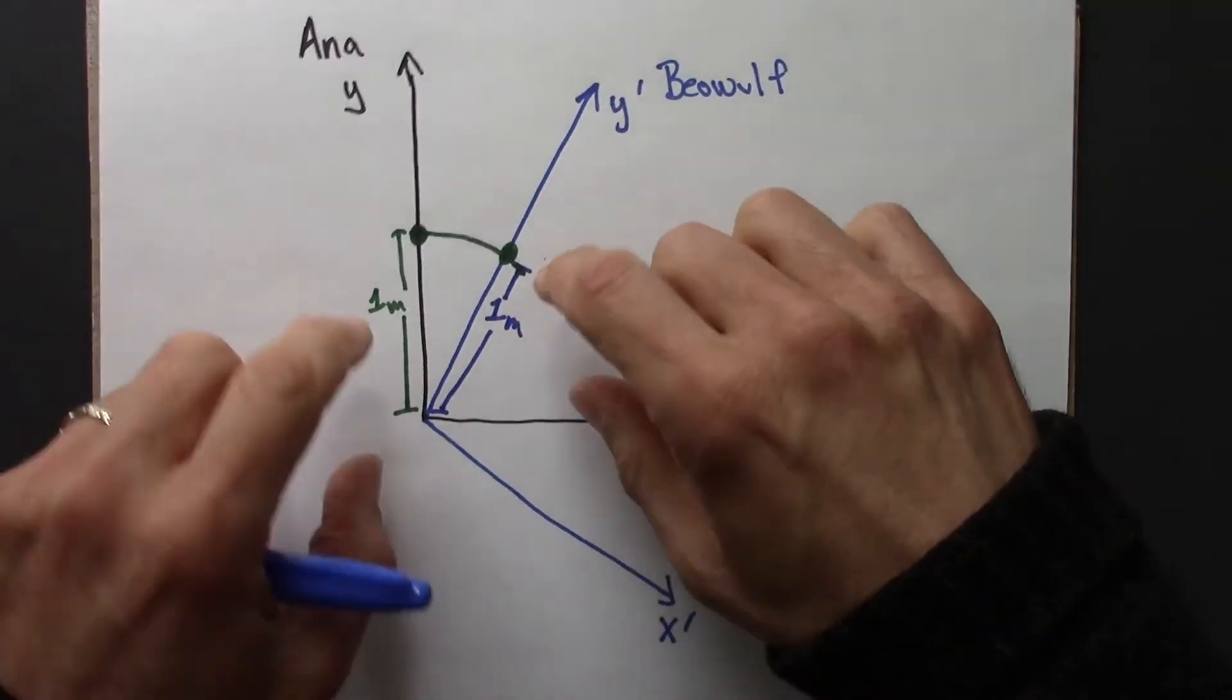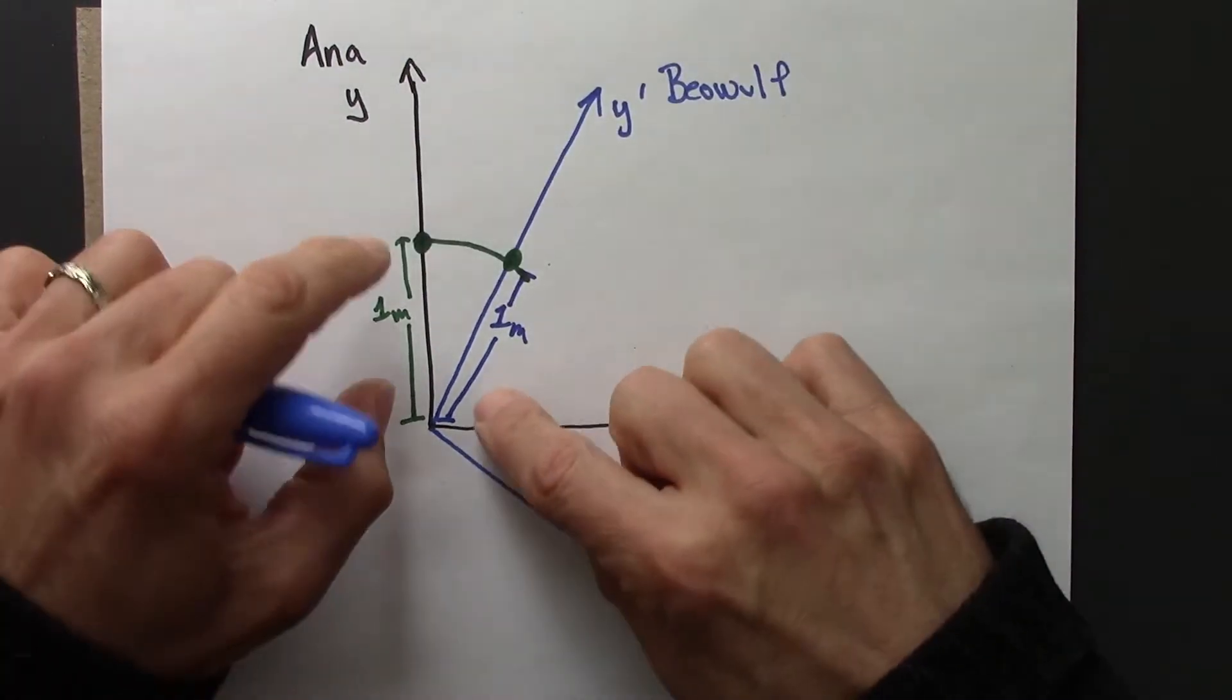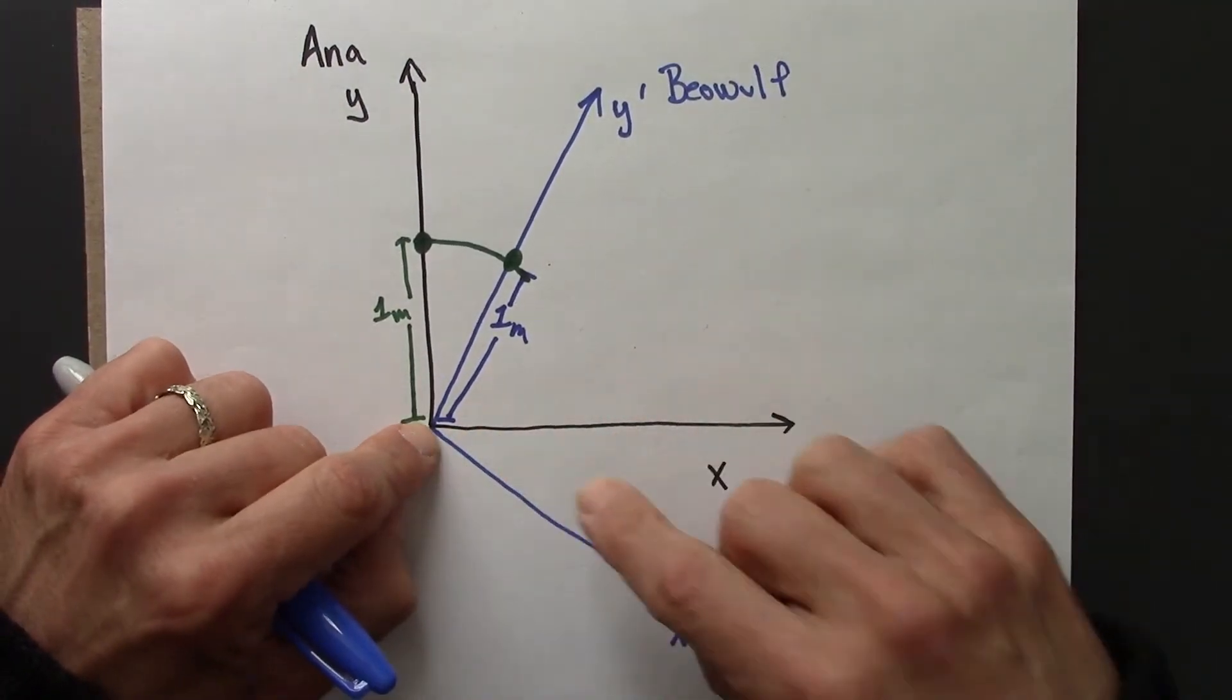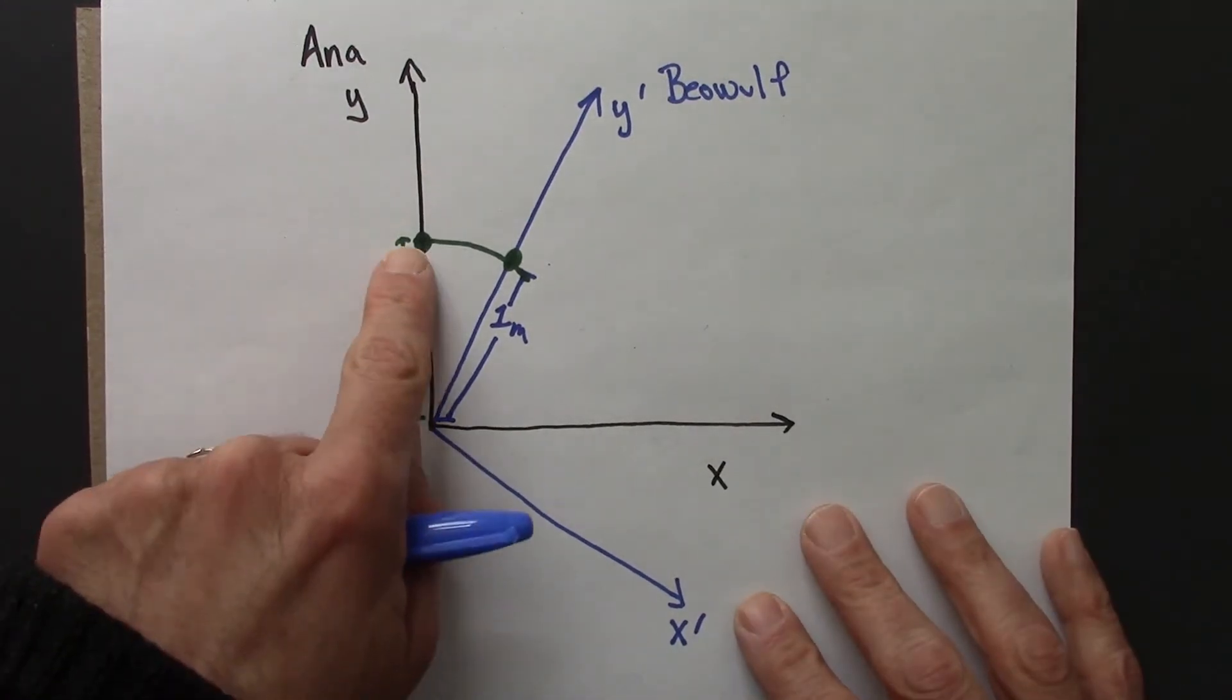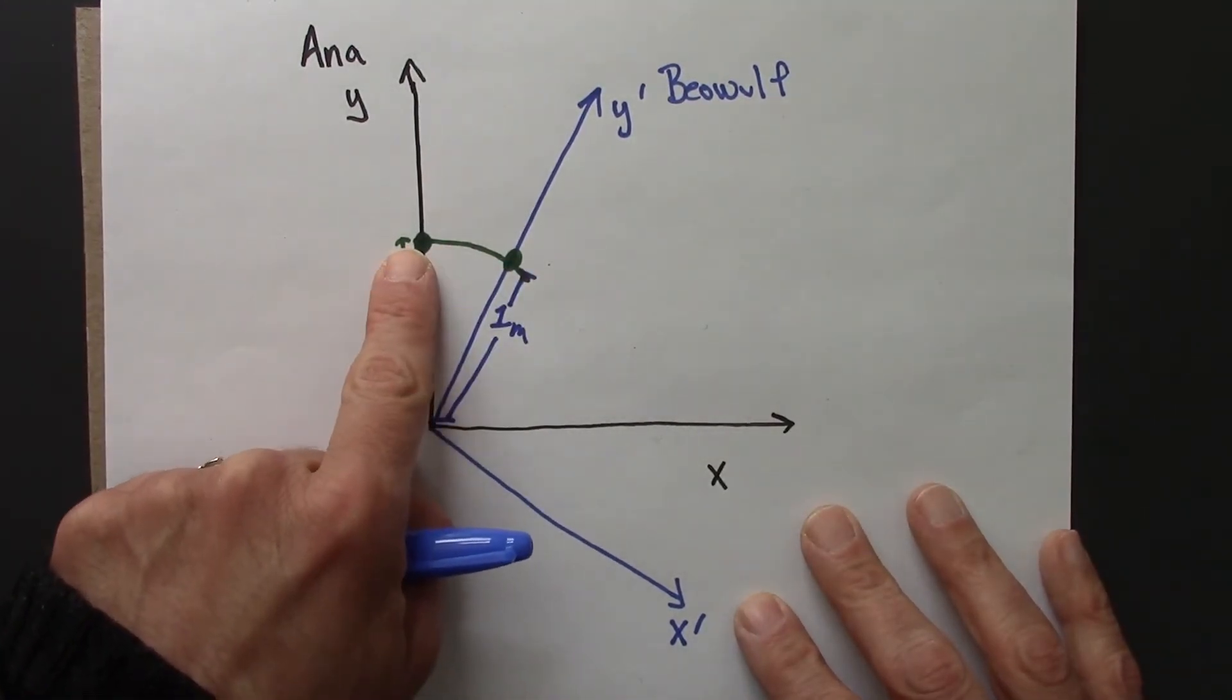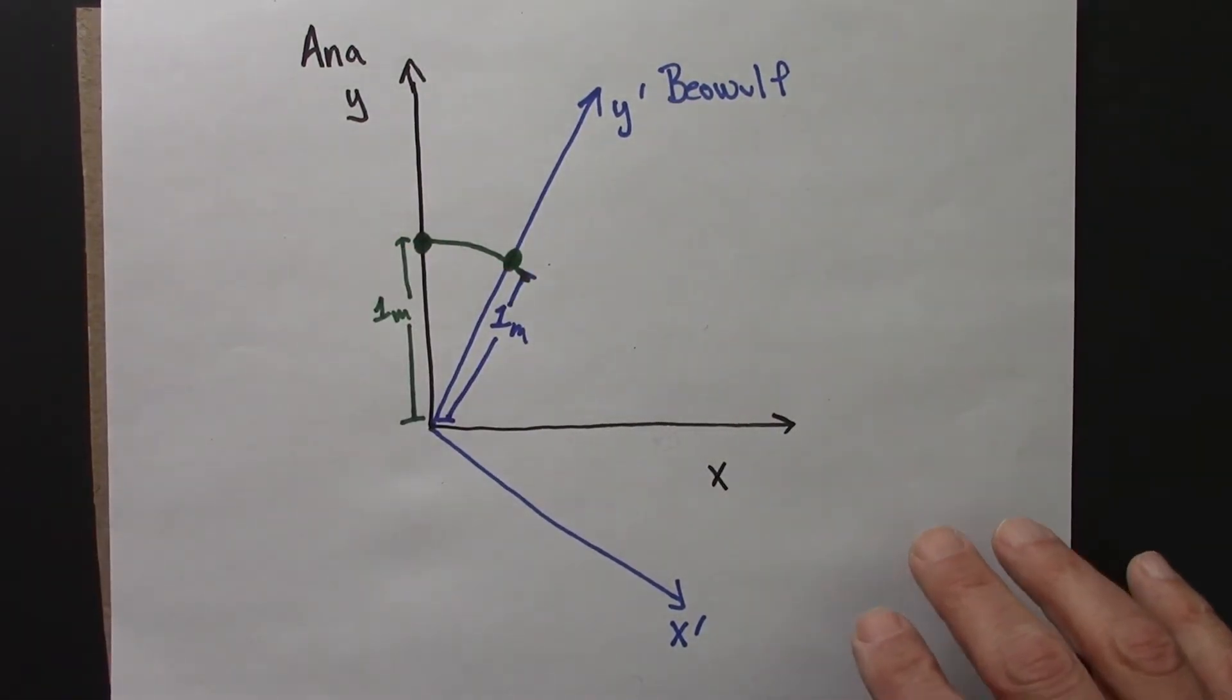Both of these points have a distance of one from the origin, therefore they have to lie on a circle. And then Beowulf could come along and say, what about this point here?